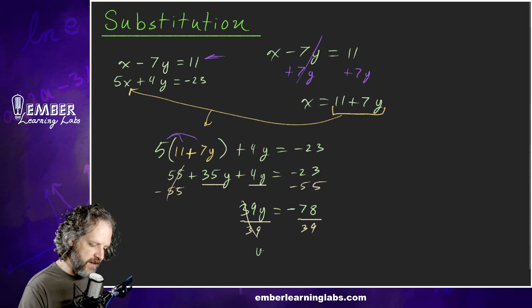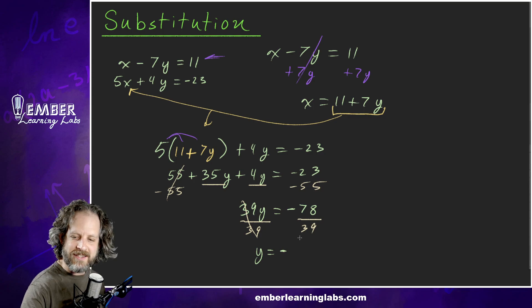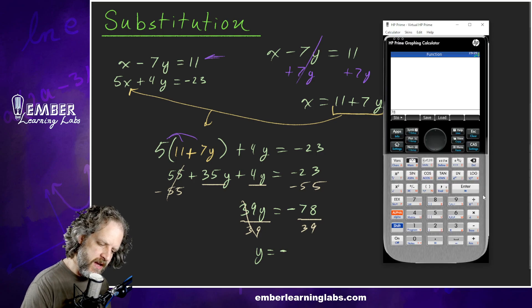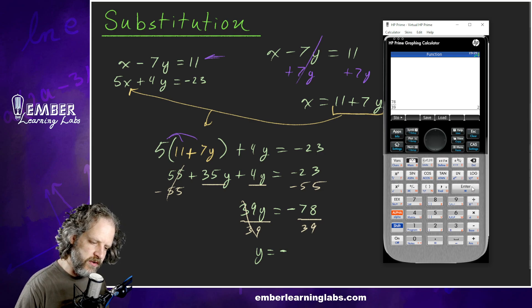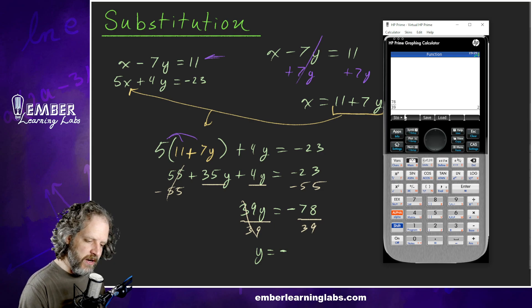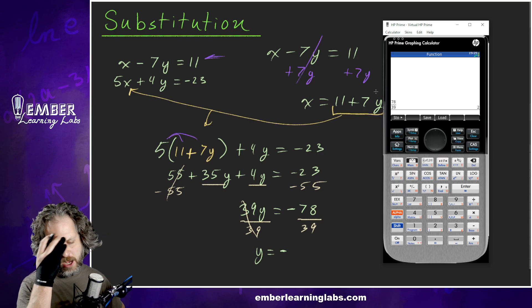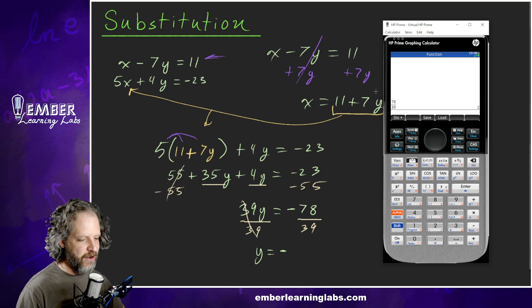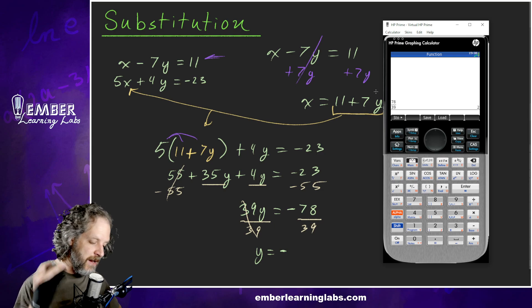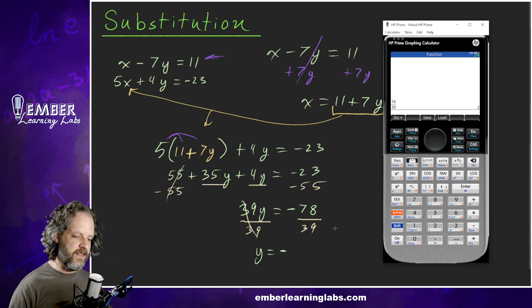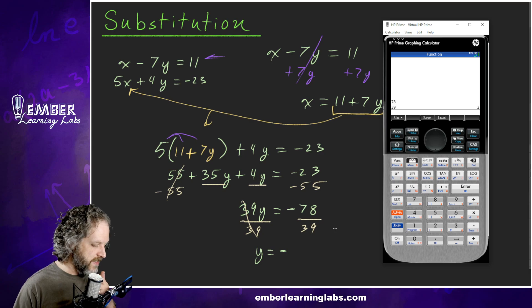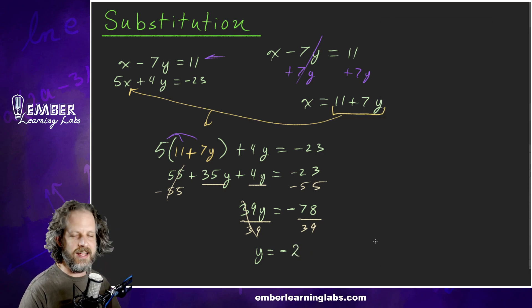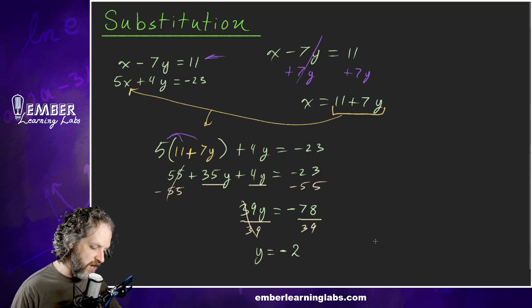So 35y plus 4y is 39y equals negative 23 minus 55. The signs are the same, so that would be negative 78. Now this 39 is attached to the y, so we're going to divide it off, divide by 39. Now if I'm not greatly mistaken, this is going to be a negative 2. But let's sanity check ourselves. We know it's going to be negative. Let's pull up that calculator just to double check. We're going to do 78 divided by 39 equals 2. Yeah, we're right. And you notice that I didn't put negative 78 in here. That's a habit I have. I like to let my brain handle the sign rules and the calculator handle the calculations themselves, the numerical bits. That means less button pushing and less error. It also keeps my brain involved and engaged.